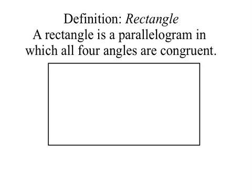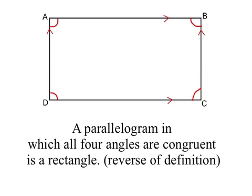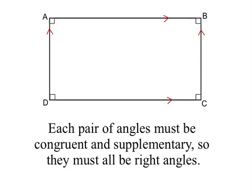A rectangle is a parallelogram in which all four angles are congruent. So if we're given a parallelogram where all four angles are congruent, we know that it's a rectangle — this is the reverse of the definition. Each pair of angles must be congruent and supplementary, so they must all be right angles.